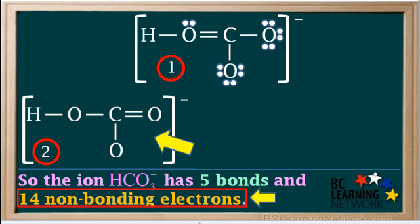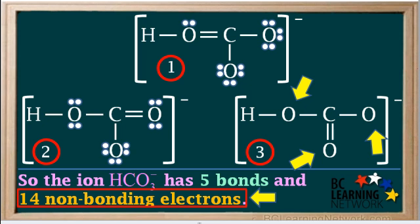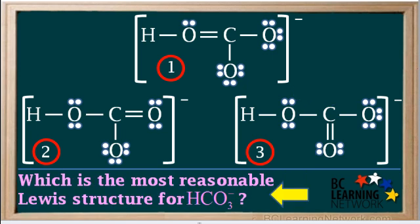Now we can add the 14 non-bonding electrons to the atoms in structure two to give them stable octets. We add the required number of lone pairs to these three oxygen atoms. You can check each atom to see that all the atoms other than hydrogen have stable octets — you can always pause the video if you like. Now we add the 14 non-bonding electrons to structure three by adding the required number of lone pairs to each oxygen atom. Again, you can check to see that each atom other than hydrogen has a stable octet.